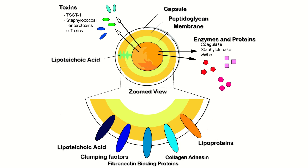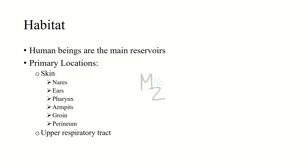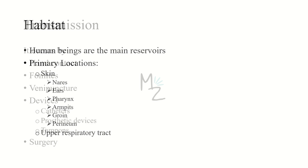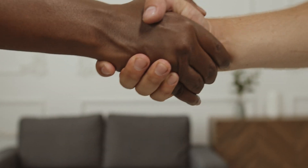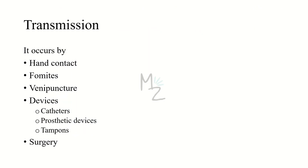Habitat: human beings are the main reservoirs. Primary locations of Staphylococcus are the skin and upper respiratory tract — specifically the nares, ears, pharynx, armpits, groin, and perineal area. Transmission occurs by hand contact, fomites, venipuncture, and devices like urinary catheters, prosthetic heart valves, prosthetic joints such as hip joints, surgical lap pads, tampons, and nasal packings.